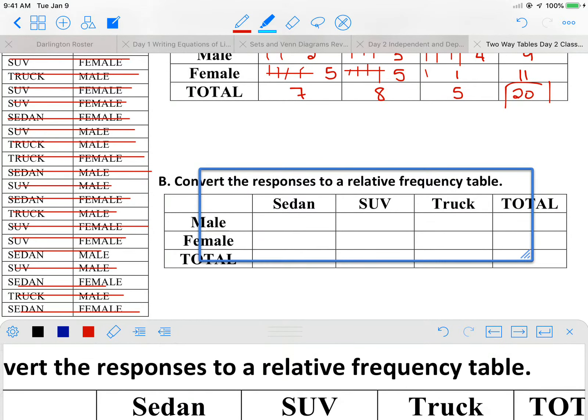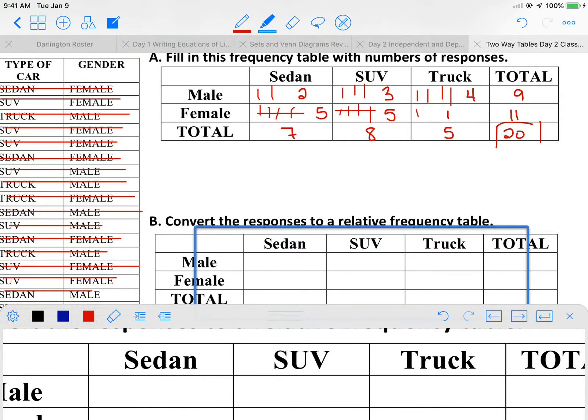So just like last night, you're going to take the total number that was in there. So I had two males that drove sedans. Can't write in highlighter, dummy. Two males that drove sedans. And I'm going to total that with the entire population. So 2 divided by 20 is 0.1 or 10%.